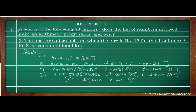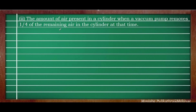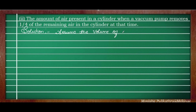Hope you understood how to find out whether a given sequence is in AP or not. The second question is: the amount of air present in a cylinder when a vacuum pump removes 1/4th of the remaining air at each stroke. We have a cylinder filled with air and we don't know the exact volume inside.